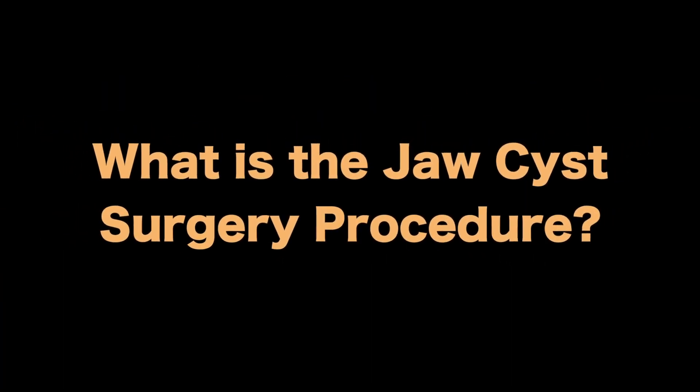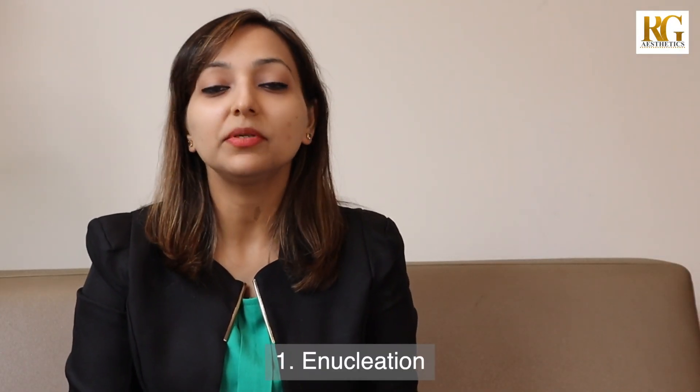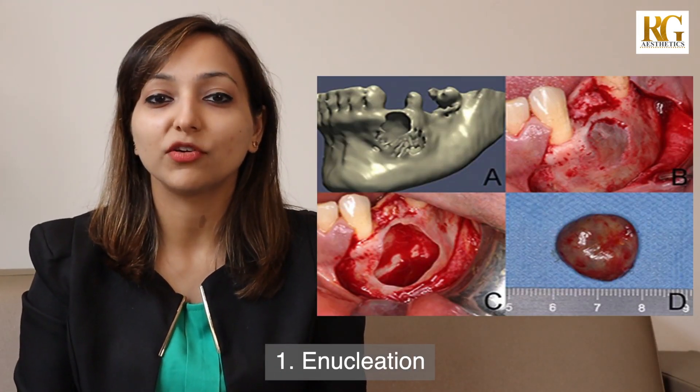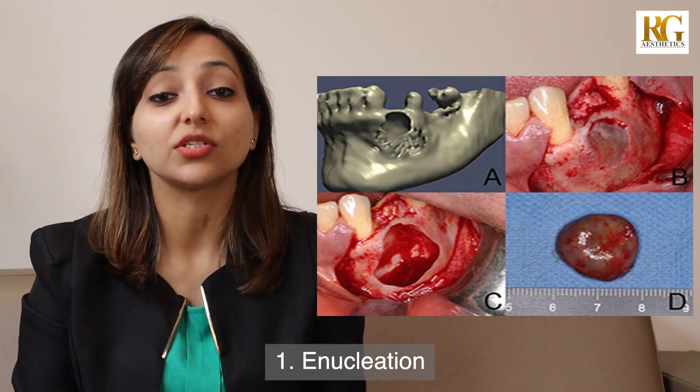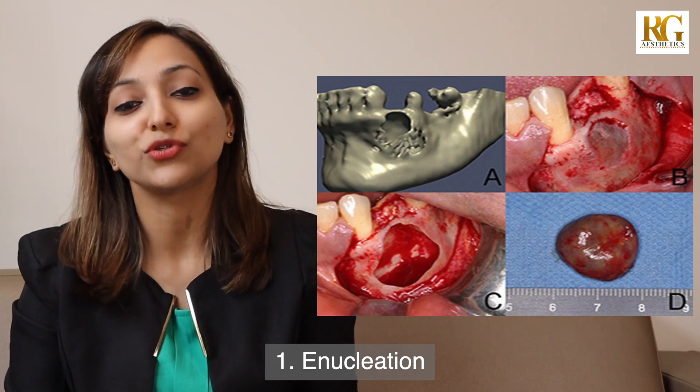What is the procedure for jaw cyst surgery? Small jaw cysts can be completely removed as a simple daycare procedure under local anesthesia. It involves raising a small gum flap and removing a small amount of bone covering the cyst, then completely shelling out the cyst from the jaw bone. We then wash and clean the bony cavity, fill it with some bone graft or growth factors, and close the wound with a few stitches.